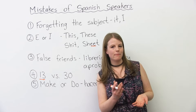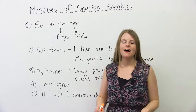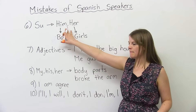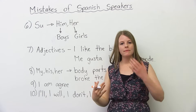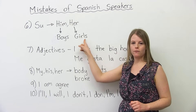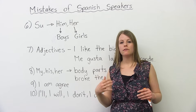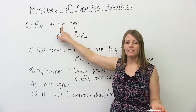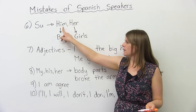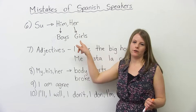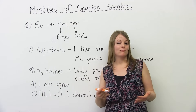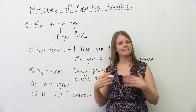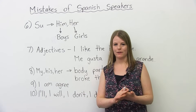Now let's look at five more common mistakes. Number six: 'su'. In Spanish you use 'su', but in English we use 'him' or 'her'. Because English has two words — 'him' for boys and 'her' for girls — while Spanish has one, Spanish speakers often mix them up. When they're talking about girls, sometimes they'll say 'him'; when talking about boys, sometimes they'll say 'her'. For example, maybe you like someone — if you say 'I like him' when you mean 'I like her', that might be confusing. So be careful with this one.